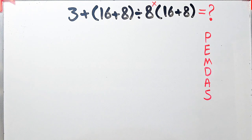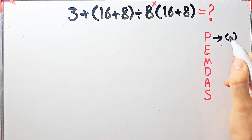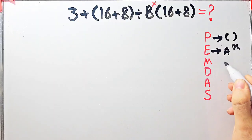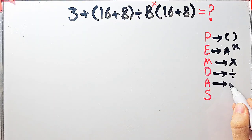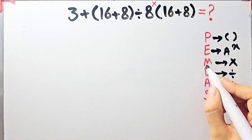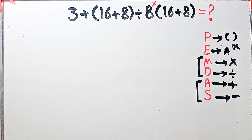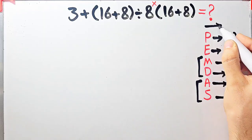In this rule, P stands for parentheses, E stands for exponent, M stands for multiplication, D stands for division, A stands for addition, and S stands for subtraction. Multiplication and division have the same level of priority, and addition and subtraction have the same level of priority. When we have both in an expression, we start from the left and simplify.